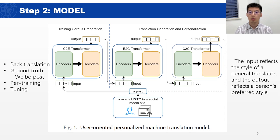In step 2, we proposed a user-oriented personalized machine translation model. The architecture of our model and its training procedures are shown in the figure. We used the C2E models to prepare training corpus, and the right side is the corpus of translation generation and personalization. It contains two transformer-based models: E2C and C2C. The E2C transformer is essentially a general English-to-Chinese translator. Note that the C2C transformer can only change the linguistic style of the general translation results, where the semantics should be retained.